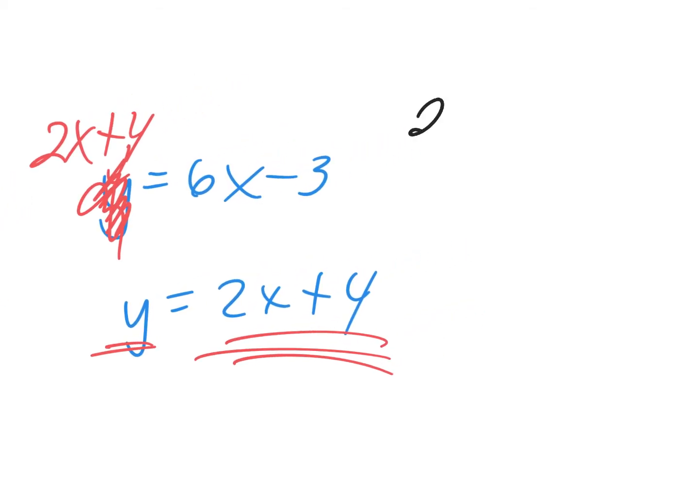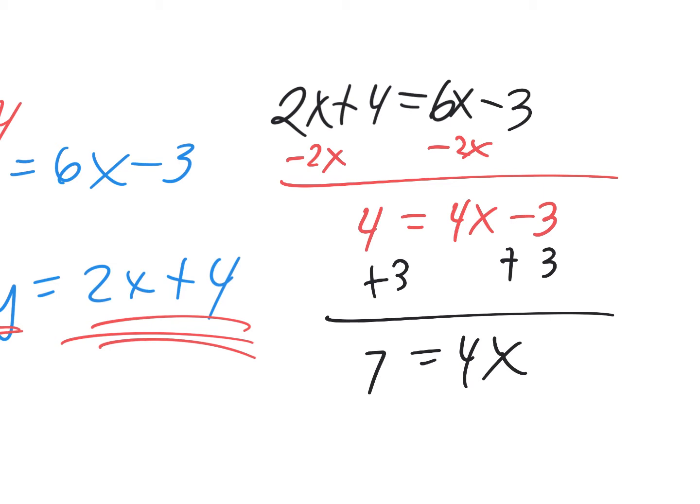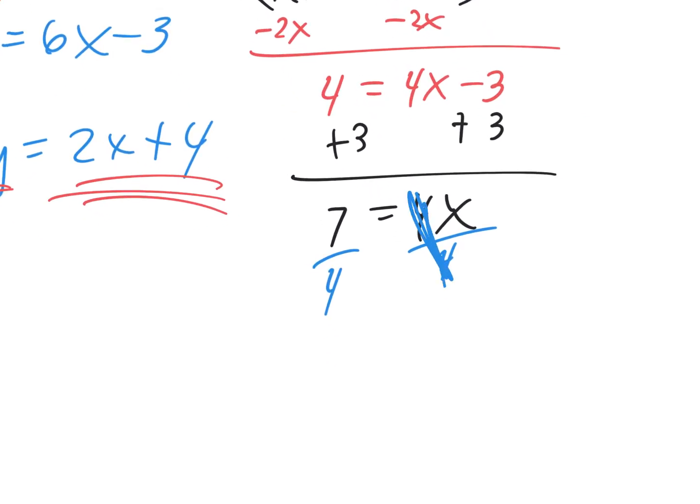Here's what you should have done. 2x plus 4 equals 6x minus 3. Noah, can you tell me step 1? Subtract 2x. 2x, excellent. And there's my answer, 7 fourths.